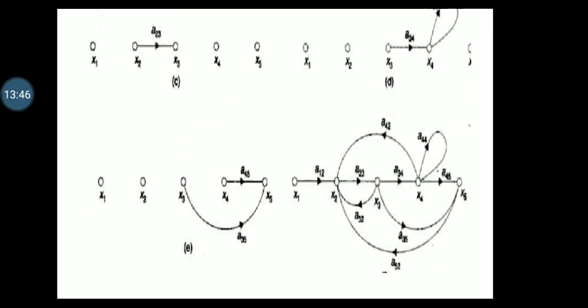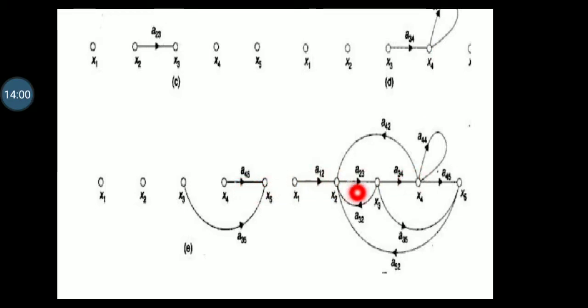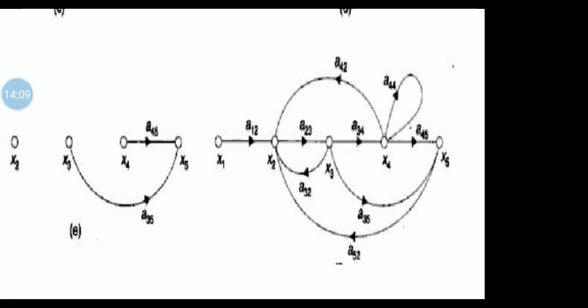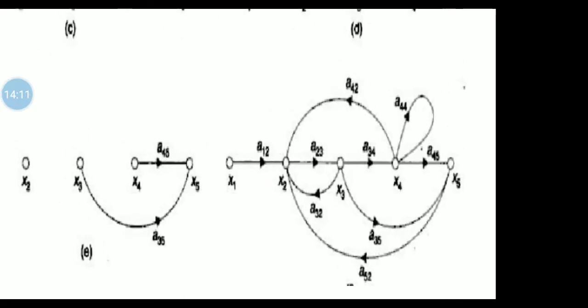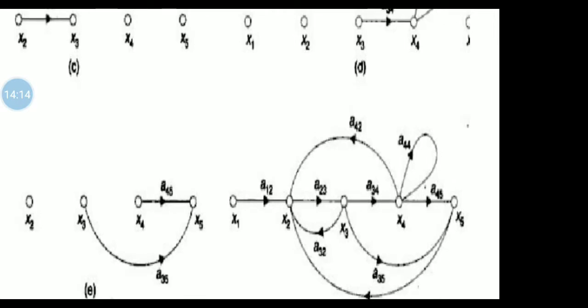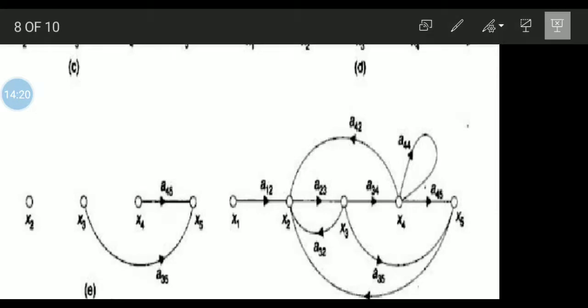All these diagrams we have to combine. When we combine, the first diagram is merged with the second, third, and fourth diagrams. All the diagrams must be combined. That will give the signal flow graph. This is how to draw the signal flow graph by combining all the individual equation diagrams.